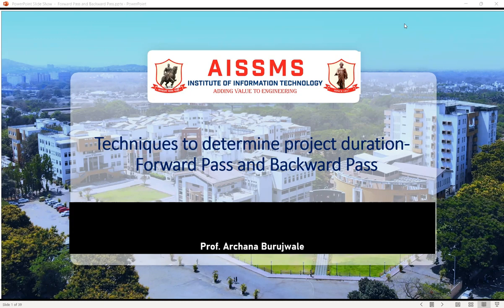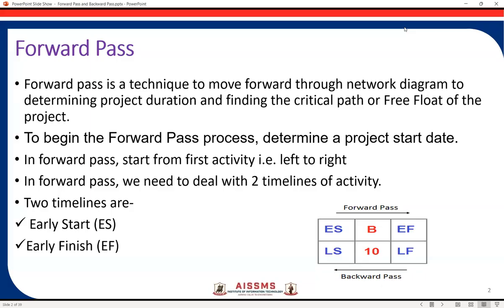So first of all, we'll start with the forward pass. The forward pass is basically a technique to move forward through the network diagram to determine the project duration and finding the critical path or free floats on the project. We are moving forward in the network diagram to find out the critical path or the free floats of the project and to find out the different timelines.